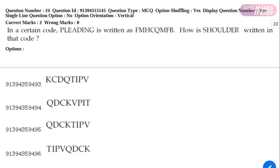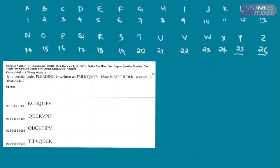In a certain code, PLEADING is written as AFMHCQMFB. Then how is SHOULDER written in that code? Four options have been given. So let's do that. First it is PLEADING, and the corresponding code for PLEADING is FMHCQMFB. And we are asked to find the code for SHOULDER.